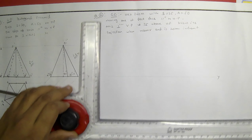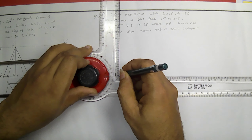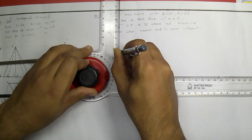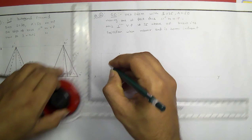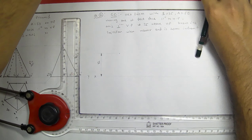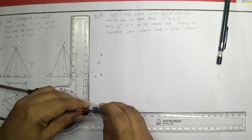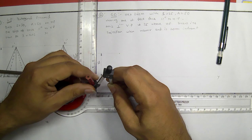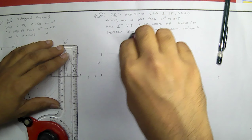Here we have to draw all 3 views, and it is given in the question that the axis is 35 mm above the HP. So I will be taking 35 as the height, and from here we have to draw the hexagonal prism. The side is 25, so I will be taking the shortest method to draw the hexagon — that is, taking a circle of radius 25, because we already have the axis point or axis location on the drawing sheet.